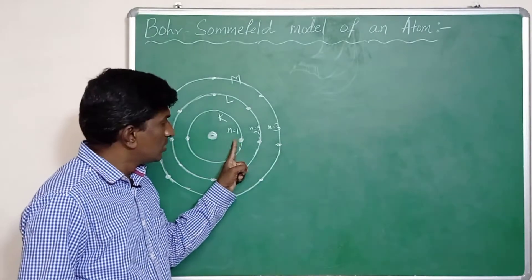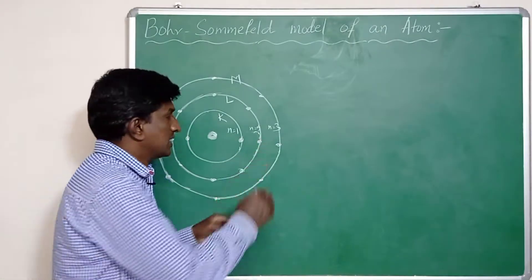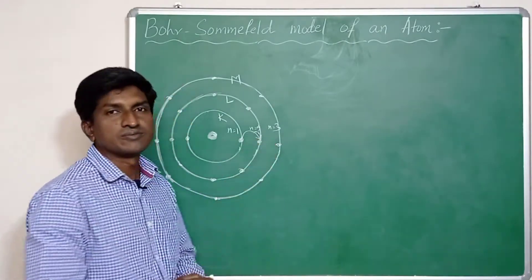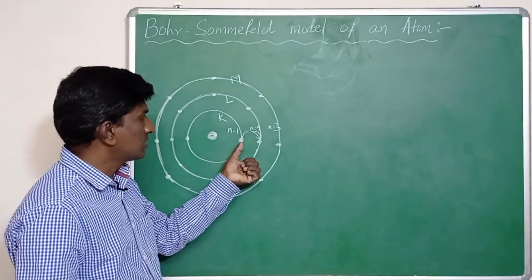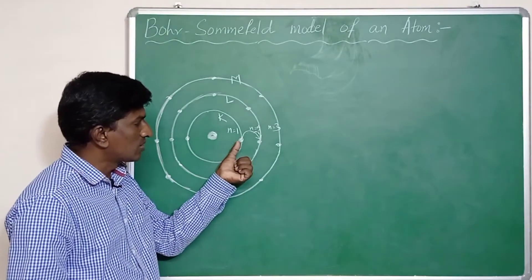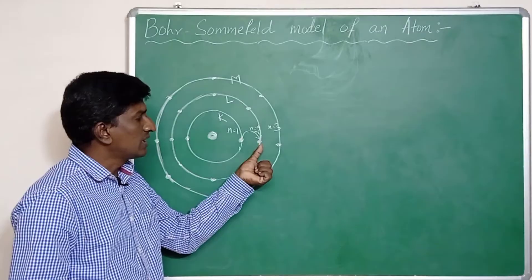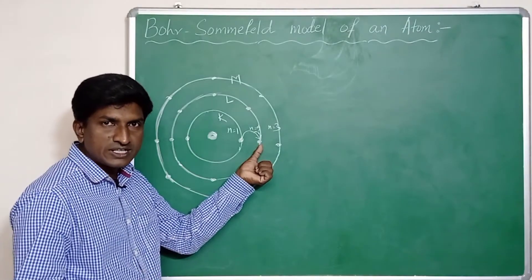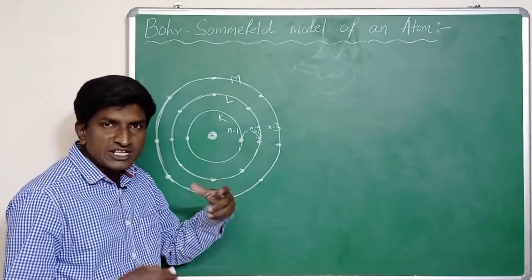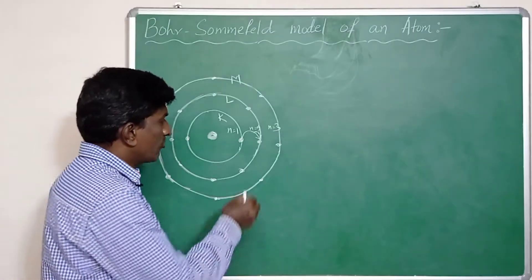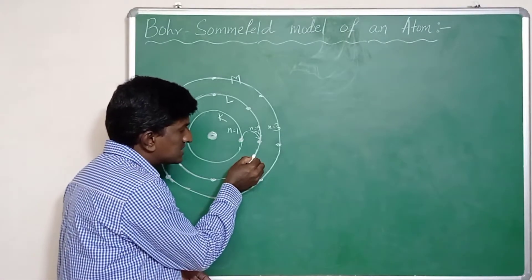When the electron jumps from ground state or lower energy state to higher energy state or excited state, energy is absorbed. Similarly, when the electron jumps from excited state or higher energy level to ground state or lower level, then energy is emitted.